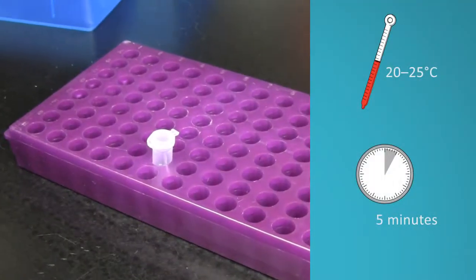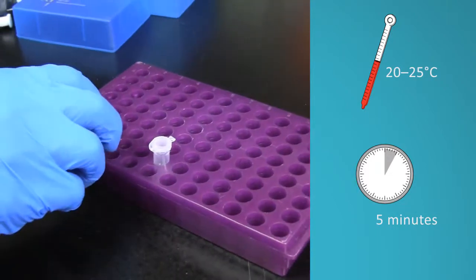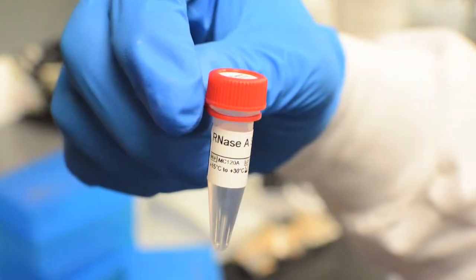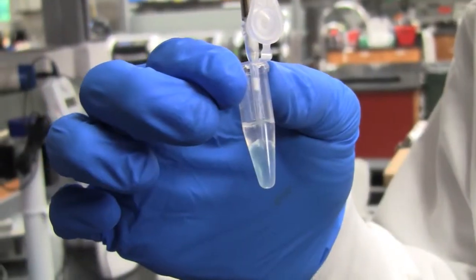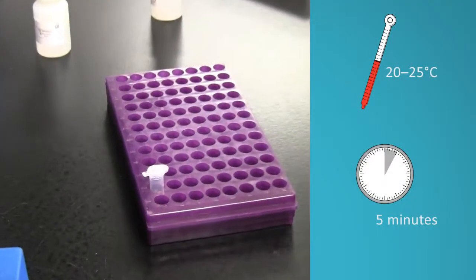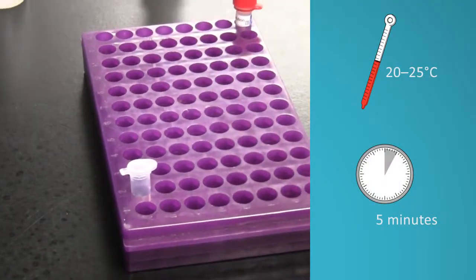Allow the sample to cool to room temperature for 5 minutes. Add 10 microliters of RNase A to each sample tube and mix by pipetting. This will ensure that only DNA is purified. Incubate for 5 minutes at room temperature to let the RNase do its job.